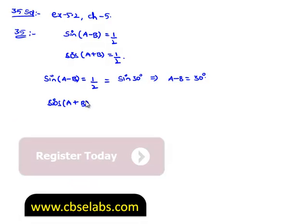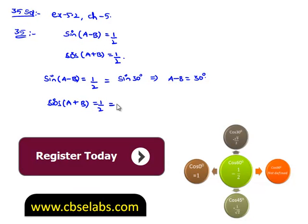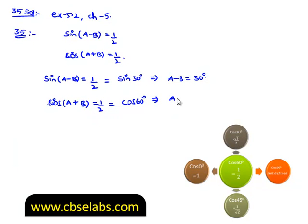cos of a plus b is also 1 by 2, that is 1 by 2 can be written as cos of 60 degrees, therefore we can say a plus b is equal to 60 degrees.